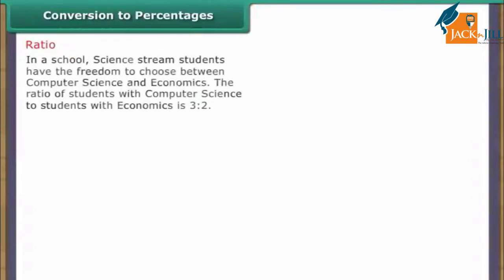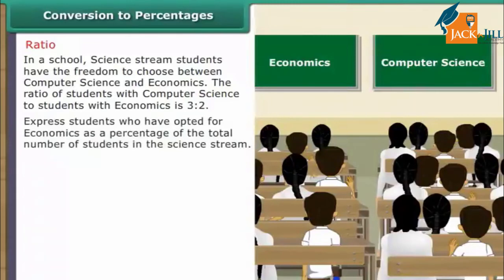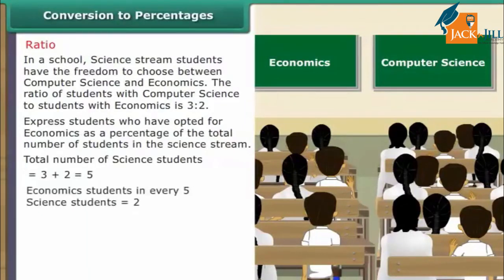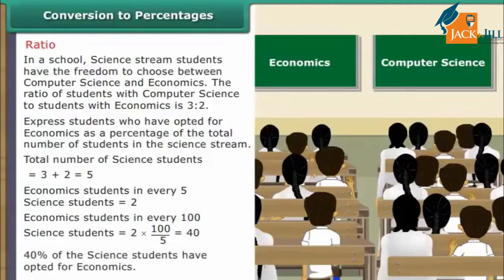Ratios. In a school, science stream students can choose between computer science and economics. The ratio of students with computer science to students with economics is 3 is to 2. Total science students = 3 + 2 = 5. Economics students in every 5 science students is 2. Economics students in every 100 science students = 2/5 × 100 = 40. Therefore, 40% of the science students have opted for economics.